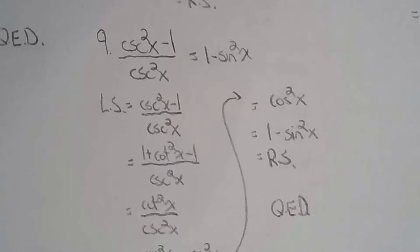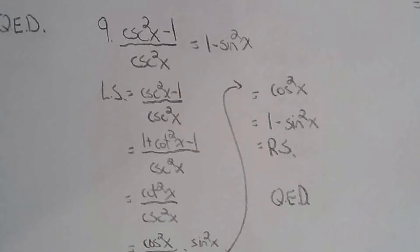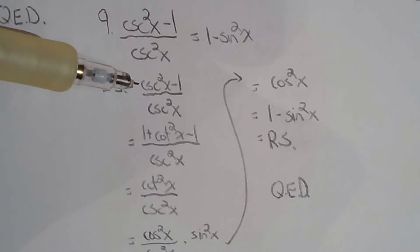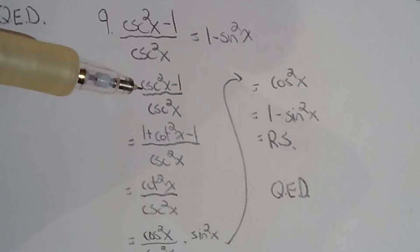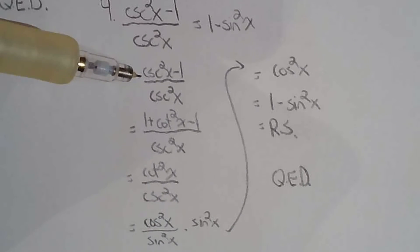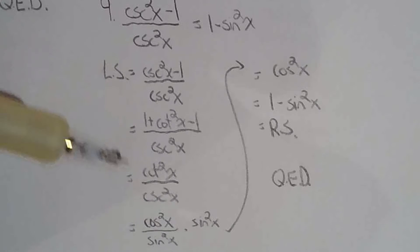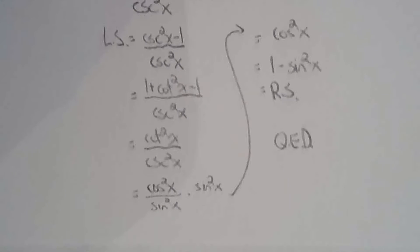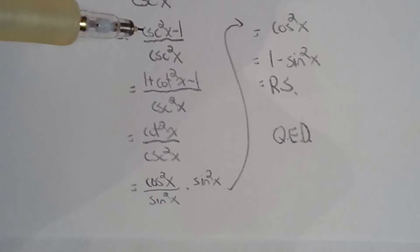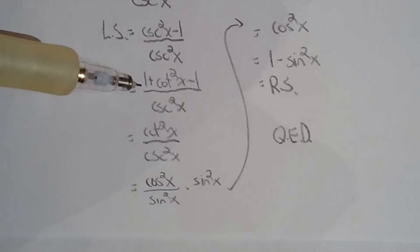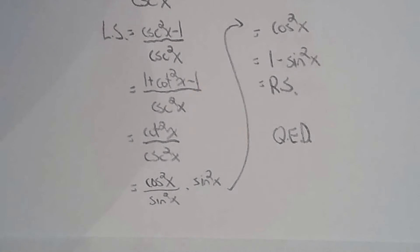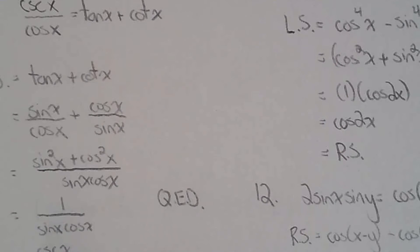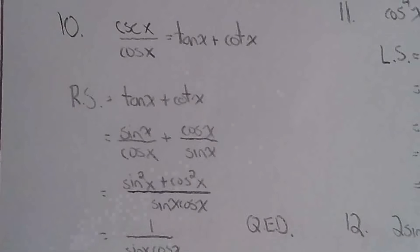For number nine, I used the Pythagorean identity — specifically cosecant squared x equals 1 plus cotangent squared x. If you don't know that version, your solution might be a bit longer. It simplifies and becomes 1 minus sine squared x.